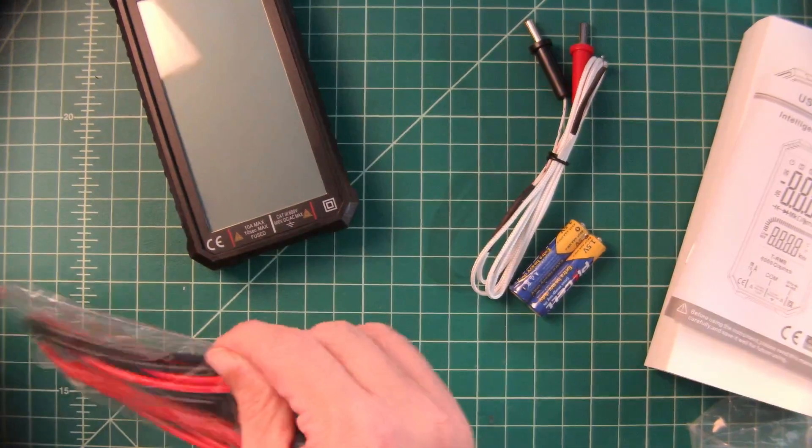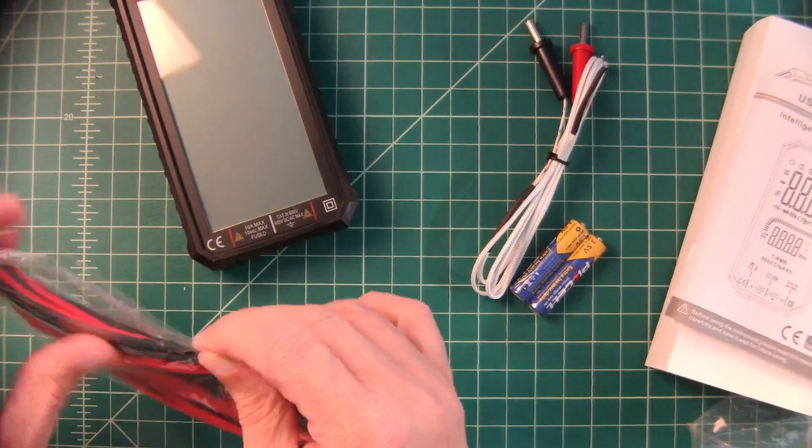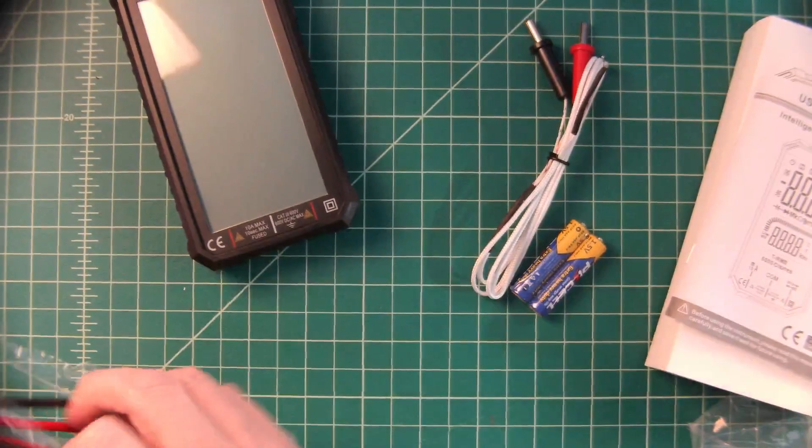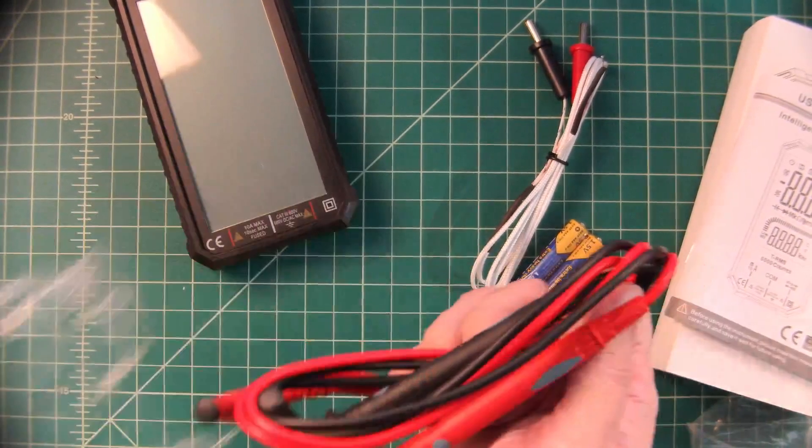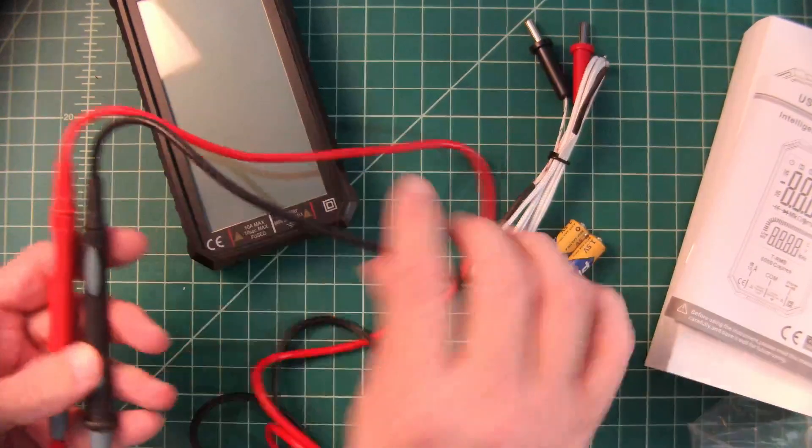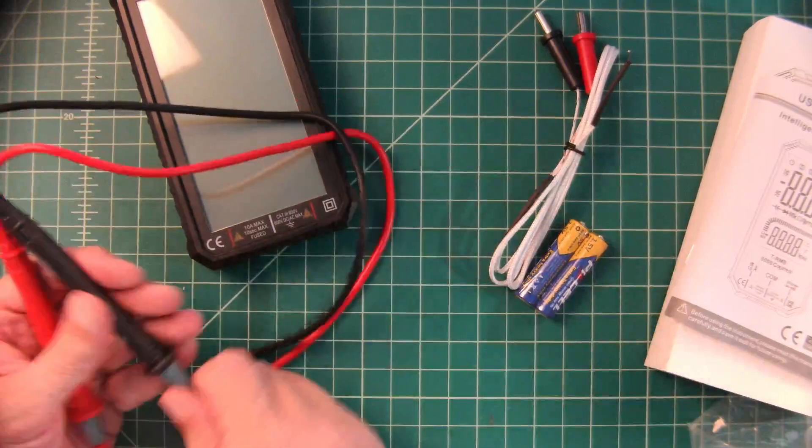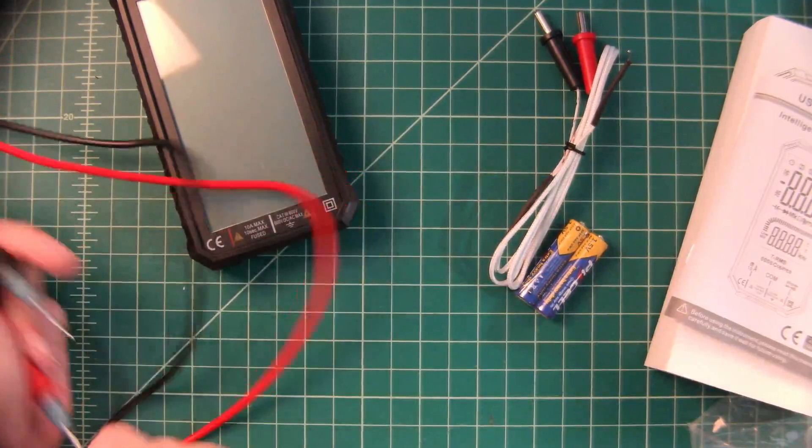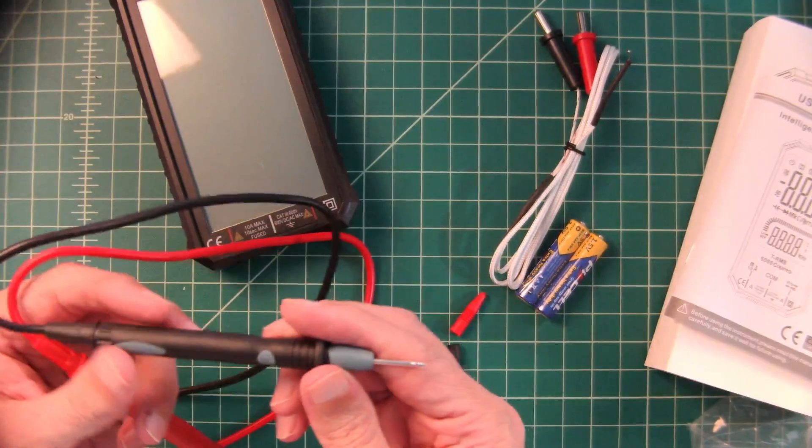And then here are the probes. These are pretty standard probes that you would find on any sub $50 multimeter. By the way I'll include a link where you can purchase this multimeter below. They're made out of PVC and they seem like they're going to work well.